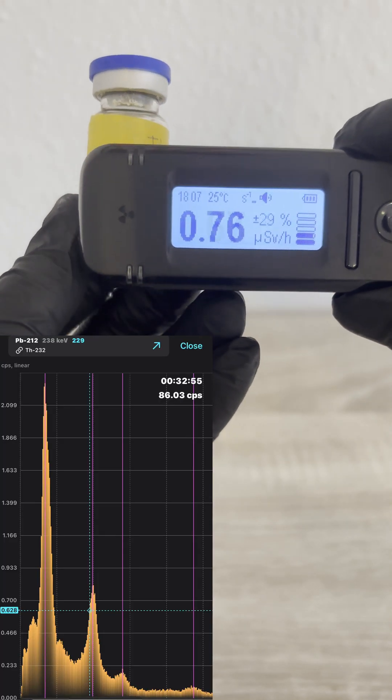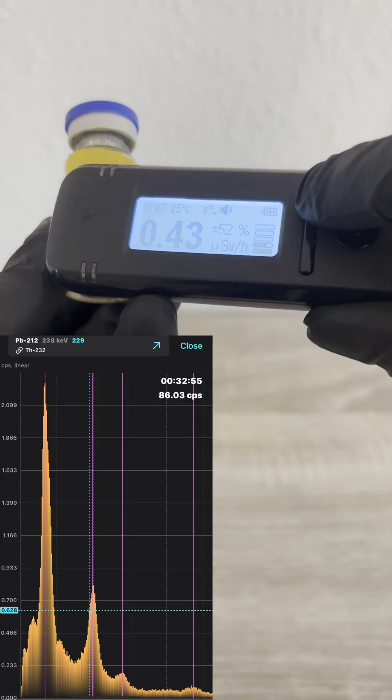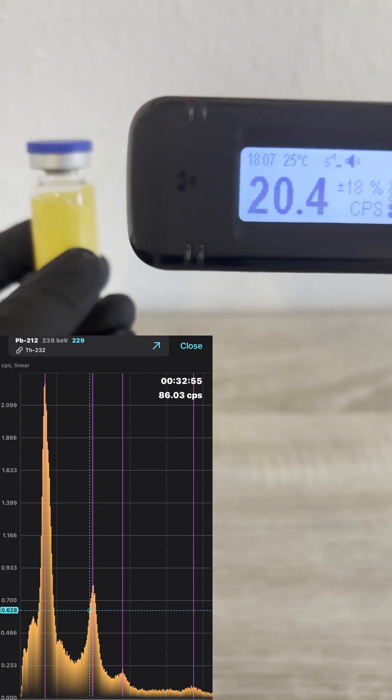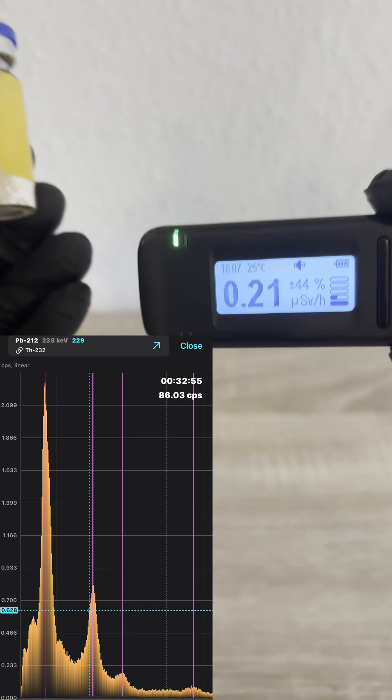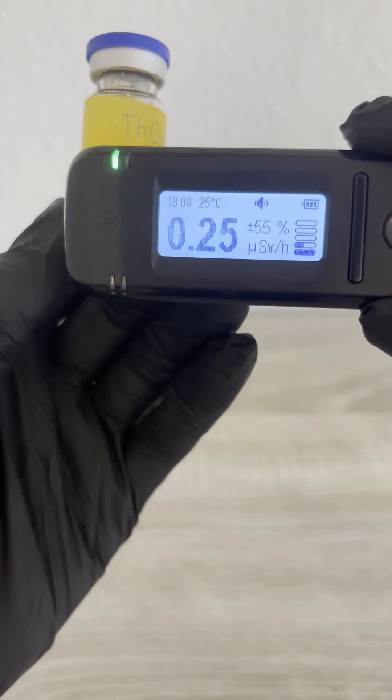In the spectrum, several peaks start to appear. You might see gamma lines from lead-212, bismuth-212, and thallium-208. These are all part of the thorium decay chain.